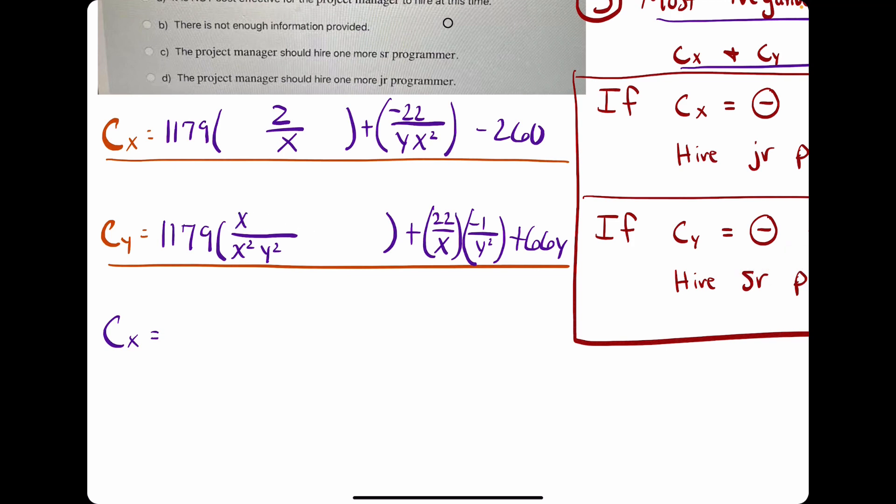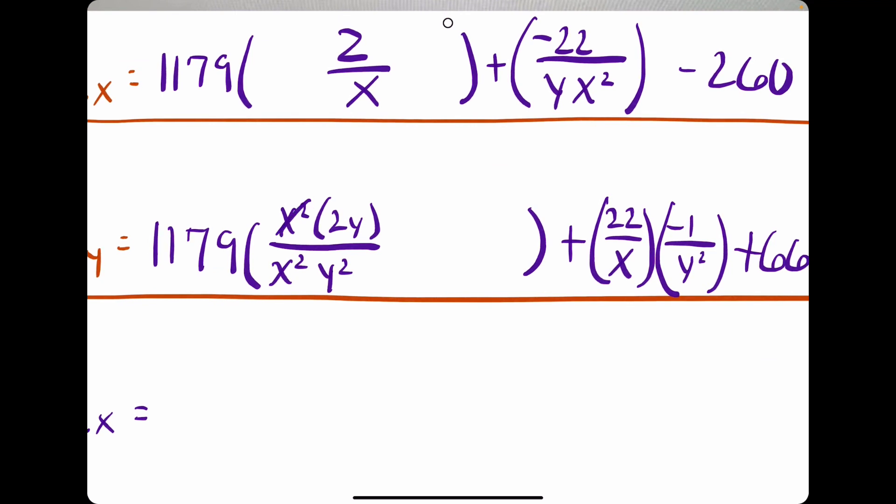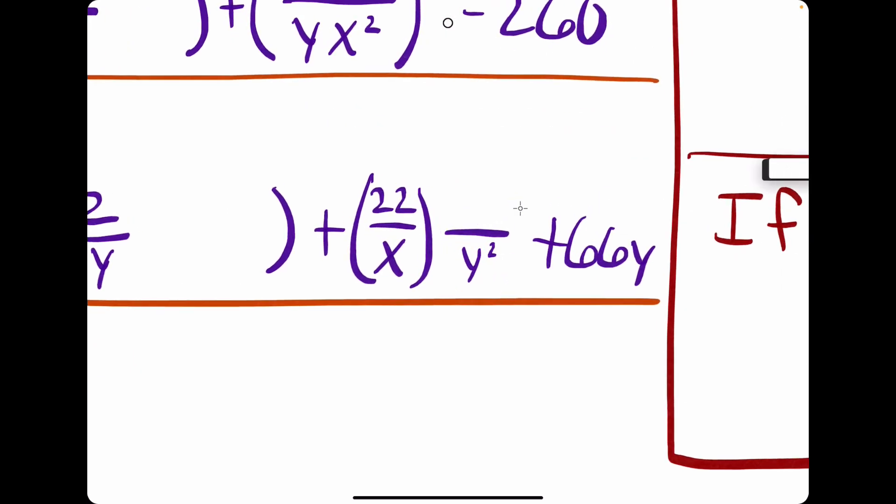And then we can do a similar simplification on the bottom. x squared times 2y up top. x squareds cancel. 1y cancels, leaving us with 2 over y for this portion. And then here, negative 22 on top. And then xy squared on the bottom. And we have that.